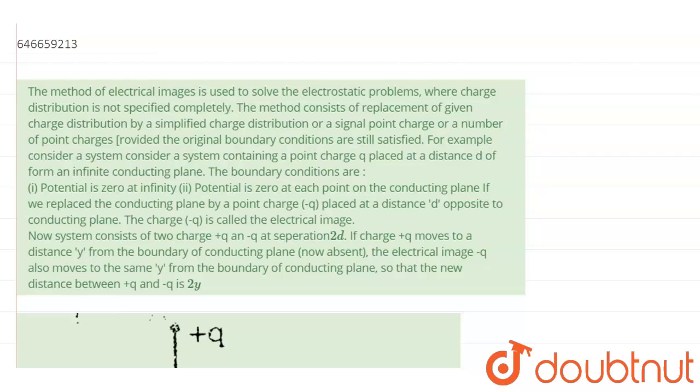used to solve electrostatic problems where charge distribution is not specified completely. The method consists of replacement of given charge distribution by a simplified charge distribution or a single point charge or number of point charges, provided the original boundary conditions are still satisfied. For example, consider a system containing a point charge q placed at a distance d